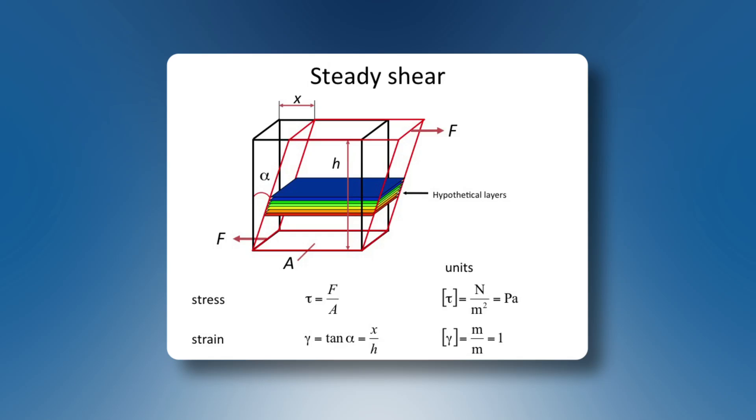And the strain is called gamma. It's a deviation x over h, or the tangent of alpha.